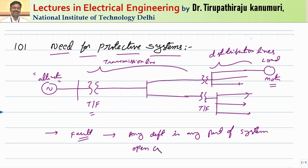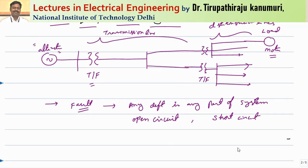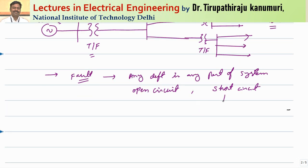The fault can be either an open circuit, which happens due to breakage of conductors, or it can be a short circuit. The short circuit can be divided into different types: it can happen between two conductors — called line to line — or between one conductor to ground, called LG, or between two conductors and ground, or between all three conductors or three conductors to ground.